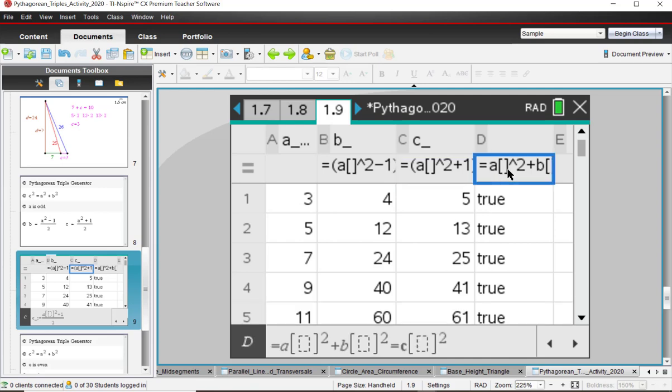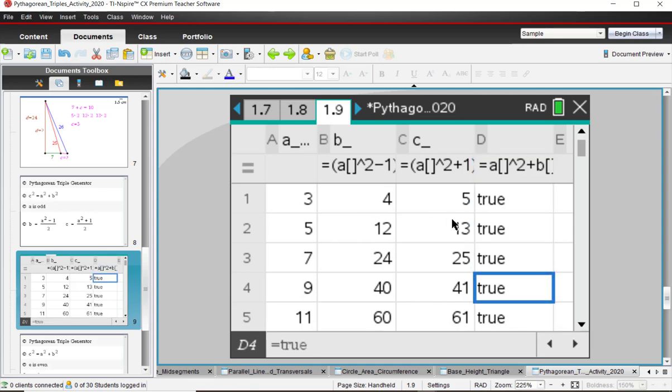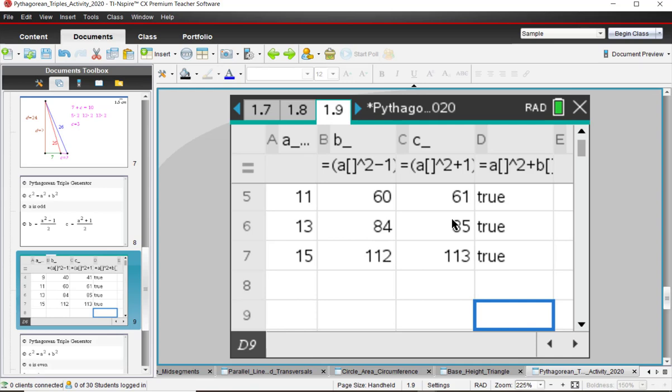Then to check, I typed in A squared plus B squared equals C squared. If this squared plus this squared equals this squared, then it says true, otherwise it says false. So we'll kind of just go down here and see what we've got here. So I've got those seem to all be true there.